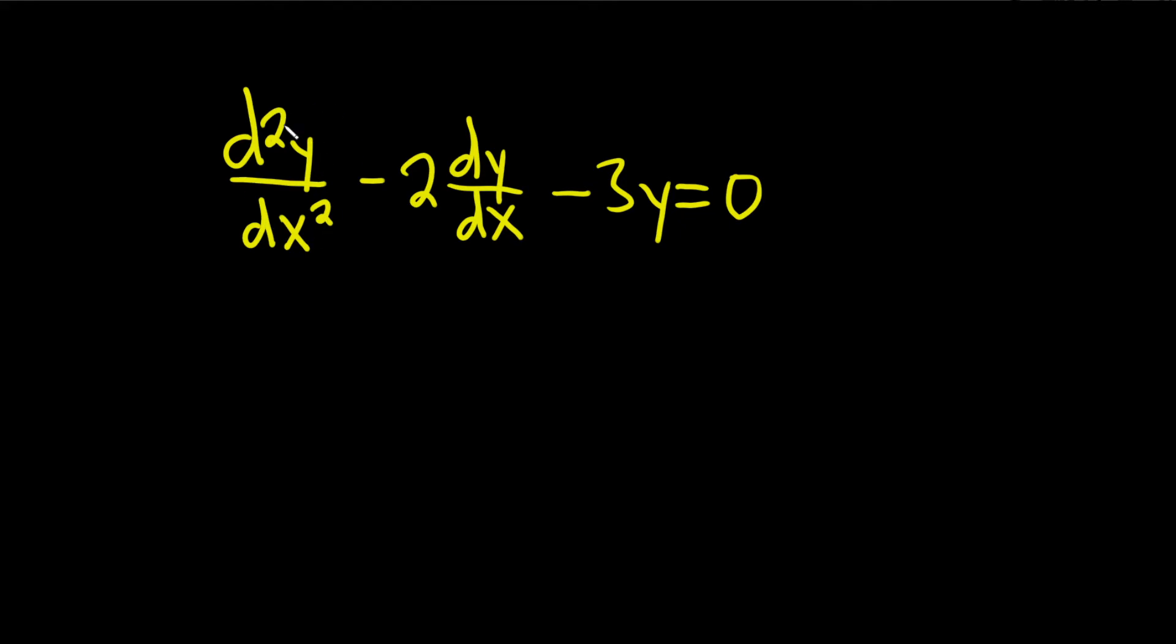So what you do is you look at the order of the derivative. So here you see the order is 2, then you write down m to the 2, and then minus 2. This is the first derivative, so it's a first order derivative, so it's m to the 1, so simply m, minus, and then if you think of y as the 0th derivative, it's really m to the 0, so you don't have to write it. And this is equal to 0.